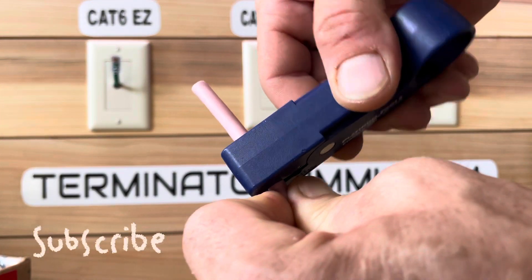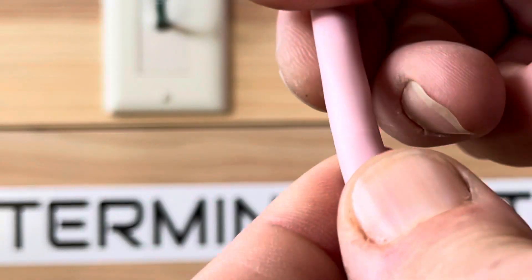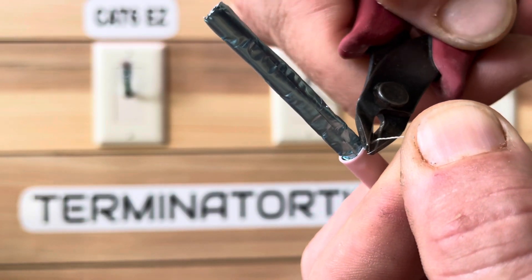With the jacket strippers, lightly score the wire. That's a clean break. Remove the jacket and cut the rip cord.